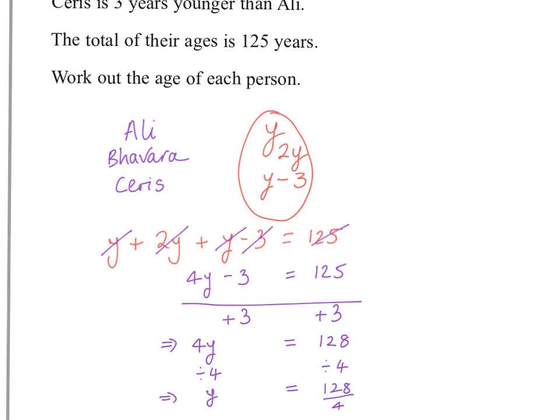And it's a calculator paper, so you can use your calculator at this point. I'm just going to do it without. So we've got 4s into 12 is 3, 4s into 8 is 2, so we know that y, and I'm using the equivalent sign here which is written like so, so that would be the same as 32.